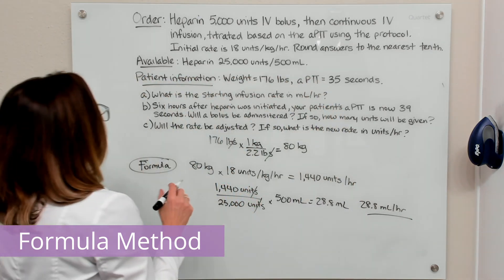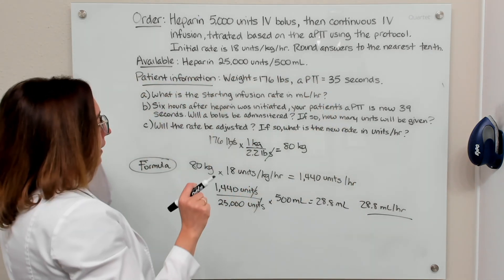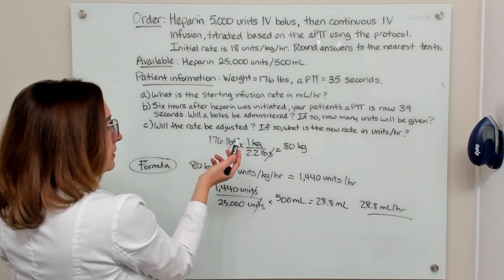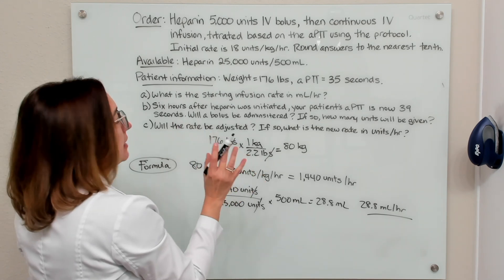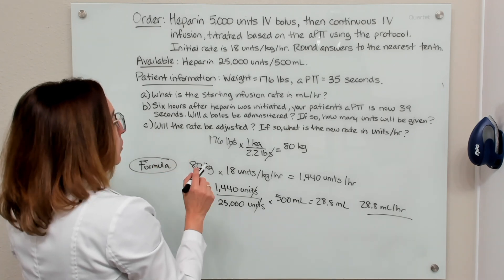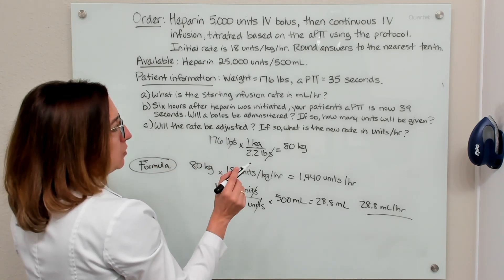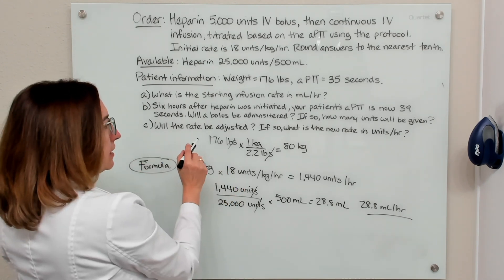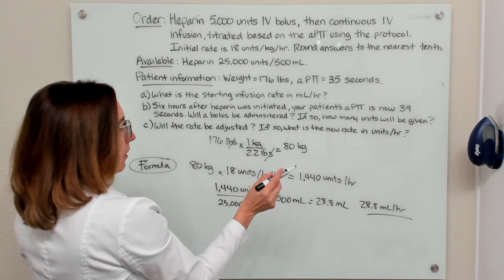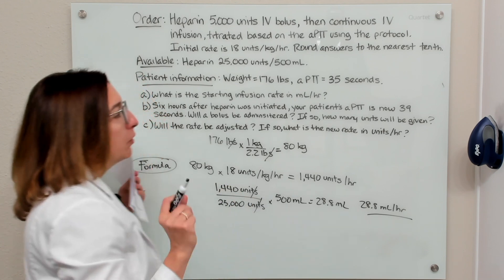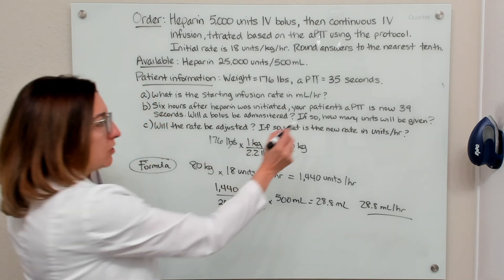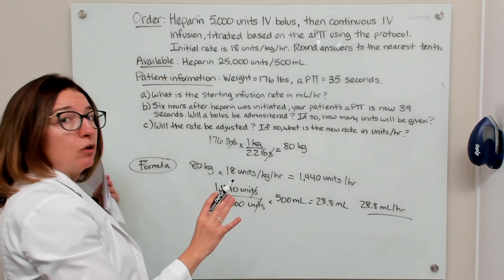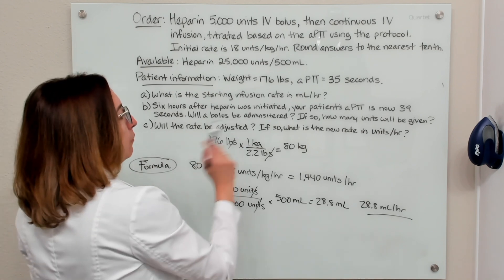That concludes part A solved three different ways. Part B asks: six hours after heparin was initiated, the patient's APTT is now 39 seconds — will a bolus be administered, and if so, how many units? Part C asks: will the rate be adjusted, and if so, what is the new rate in units per hour? We need to use the heparin protocol with the patient's APTT of 39 seconds.